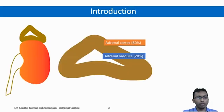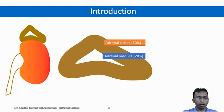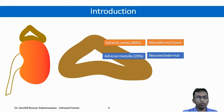Suprarenal glands consist of two separate endocrine glands. The inner adrenal medulla, which constitutes 20% of the mass of the gland, and the outer adrenal cortex, which constitutes 80-90% of the adrenal mass. These two glands are embryologically different: adrenal cortex originates from mesodermal tissue while adrenal medulla originates from neuroectodermal tissue.